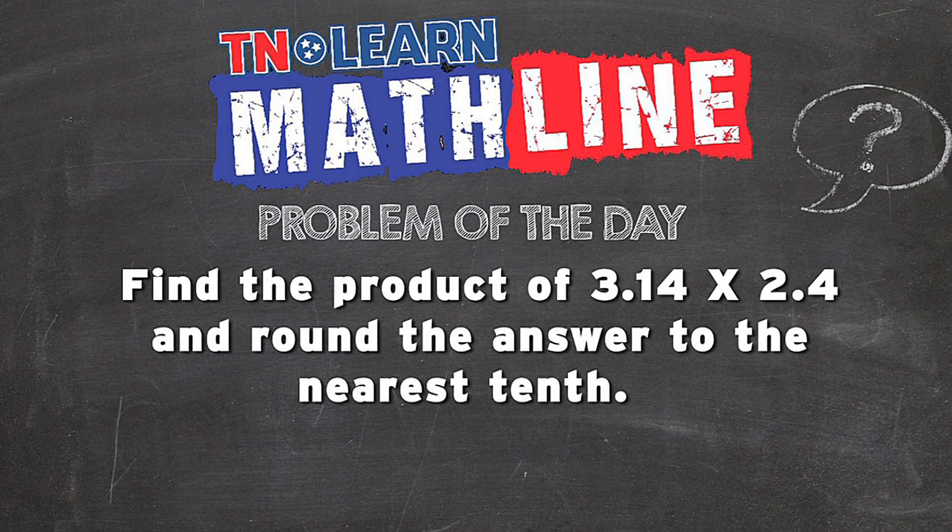Find the product of 3.14, or 3 and 14 hundredths, that's pi, times 2.4, or 2 and 4 tenths, and round the answer to the nearest tenth.